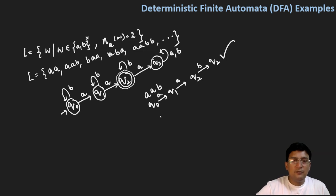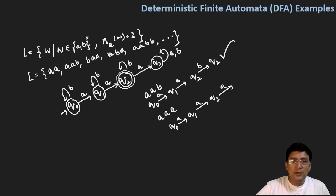Let's take a string which is not part of the language — let's say AAA. From q0, on A you move to q1; from q1, on A you move to q2; from q2, on A you move to the q3 state, which is a non-final state. So the string AAA gets rejected.